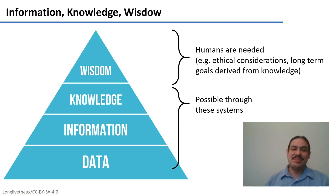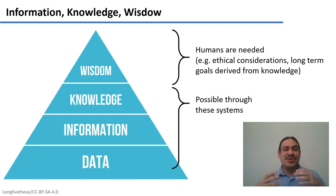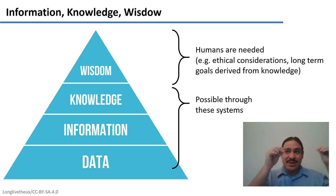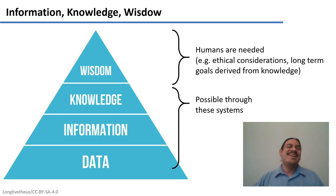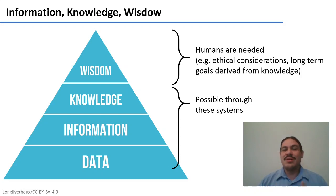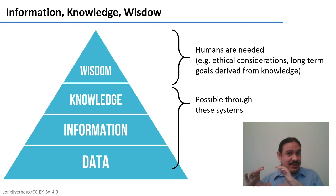These systems take raw data — terabytes of text — turn it into information, which is all these disparate facts about the world. We can use an inference engine to turn that information into knowledge, for example, knowledge about how many cylinders are behind a little square, or knowledge about Chicago derived from a question. As we go from raw data to information to knowledge, these systems can handle it. We still need humans to help with the wisdom part — to figure out the ethical considerations, because if we're extracting data from text on the internet, it's obviously going to be biased in many ways.